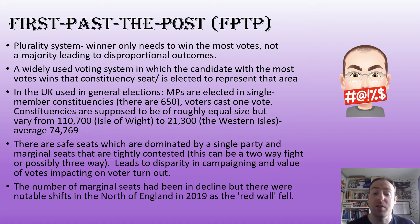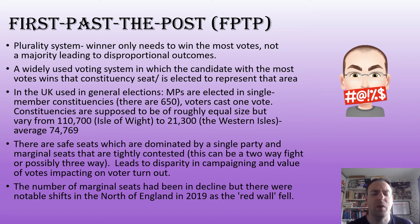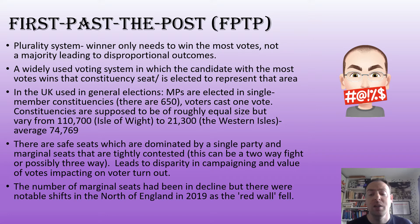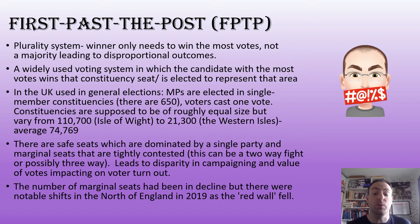Constituencies do vary considerably — from the Isle of Wight at 110,700 to the Western Isles at just over 21,000, so they've not done a very good job of equal size. Another thing worth noting is that 650 MPs seems like an awful lot. Bear in mind that in the US House of Representatives they have about 200 fewer, and even if you add the House and the Senate together it's still about 100 fewer than our MPs. For a country of our size, 650 seems like a lot.